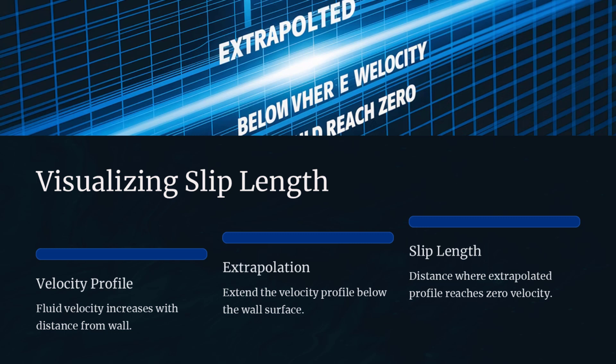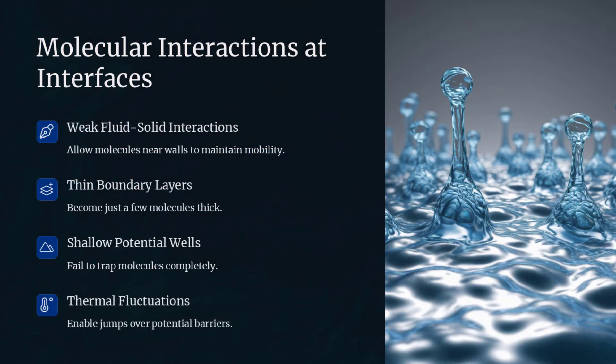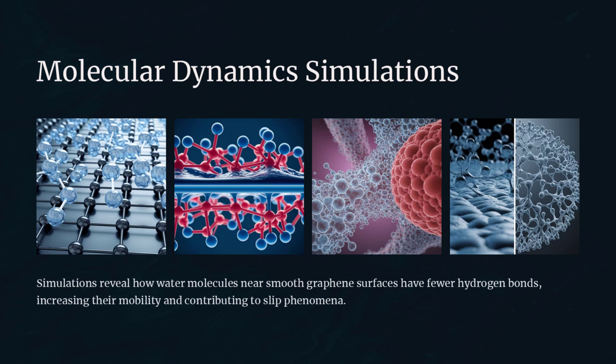At the molecular level, slip arises from weak fluid-solid interactions that allow fluid molecules near the wall to maintain finite mobility. Hydrodynamic boundary layers become molecularly thin, and interfacial potential wells may be too shallow to trap molecules completely. Thermal fluctuations can then promote jumps over these potential barriers, generating an apparent slip. Molecular dynamics simulations show water molecules near smooth graphene surfaces have fewer hydrogen bonds, increasing mobility — like people sliding past each other more easily when there are fewer handholds in a crowded corridor.